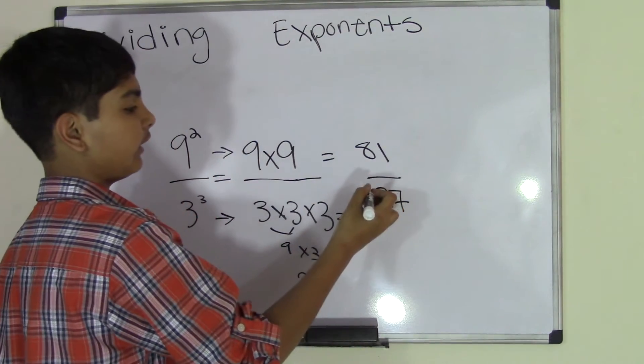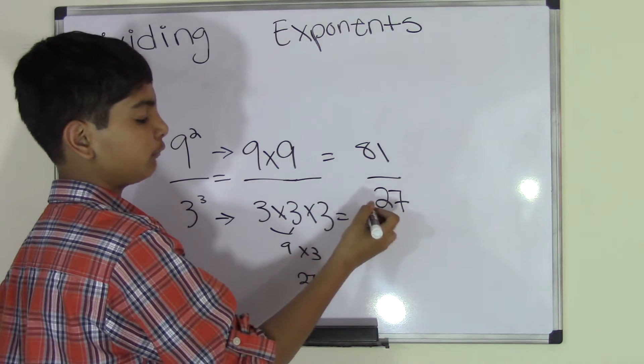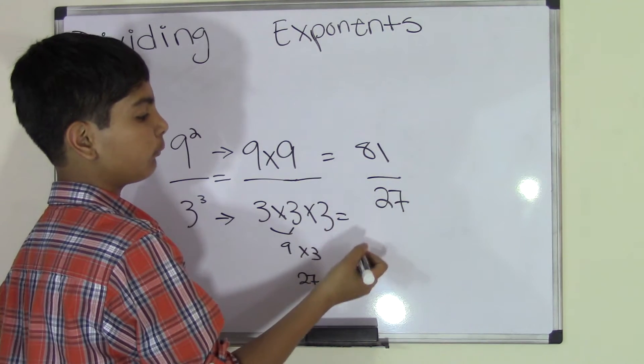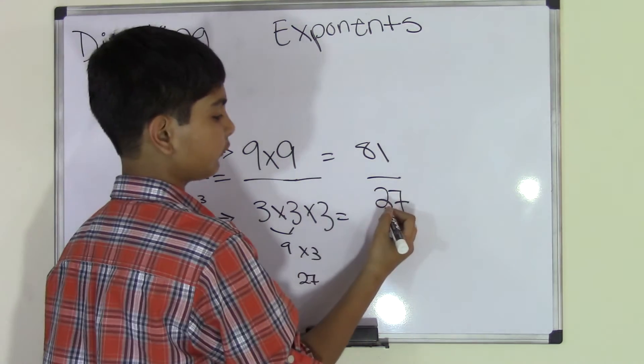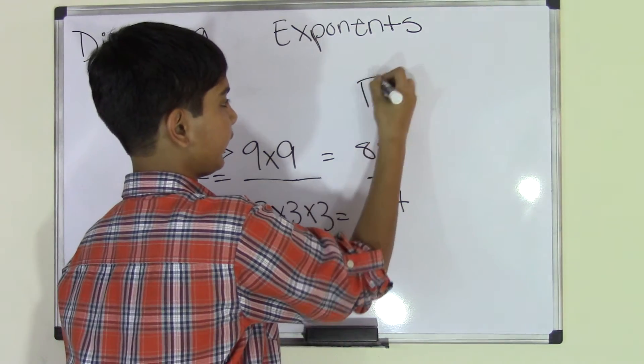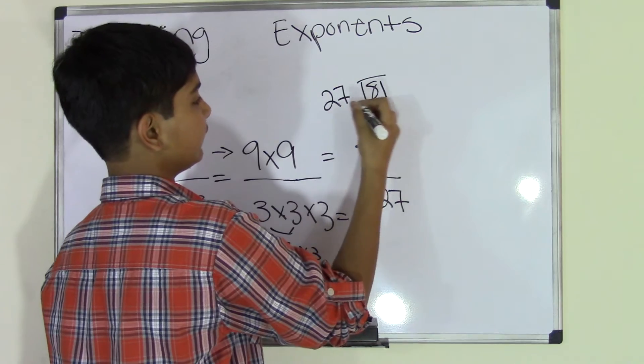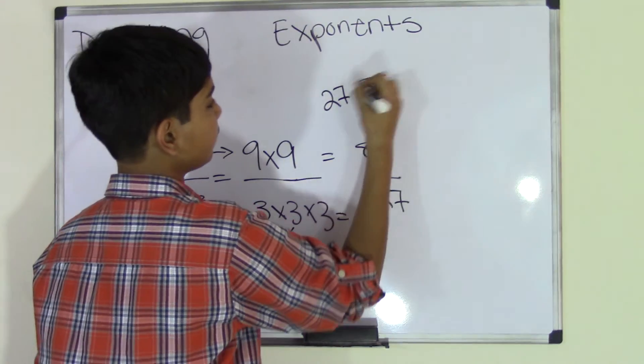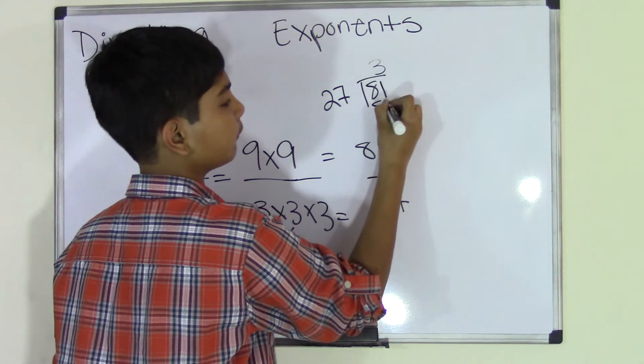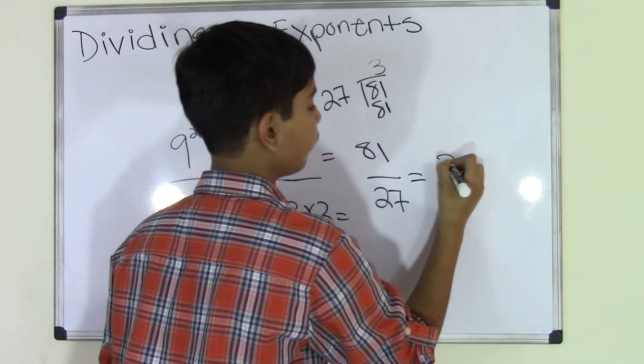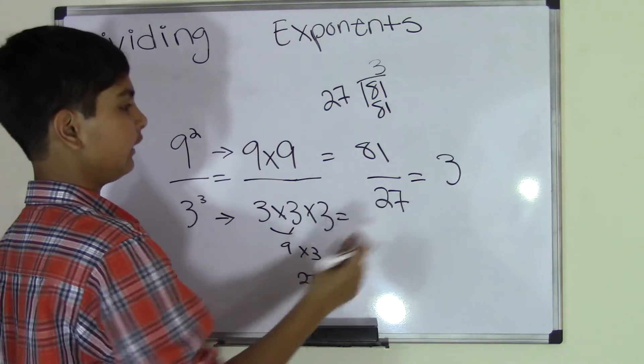Now we can make this into, this is an improper fraction, so we need to make this into a whole number or a mixed number. So we have to divide, we have to put in 81 and we have to put out 27 and we have to divide that. And this is pretty easy because I know that 27 times 3 is 81. So I get a whole number of 3. This is my quotient.